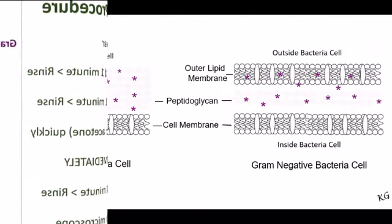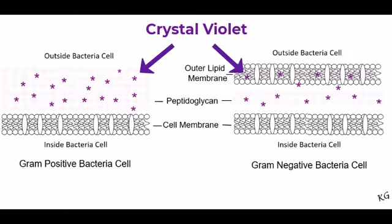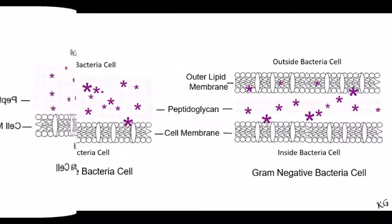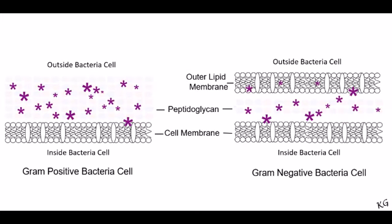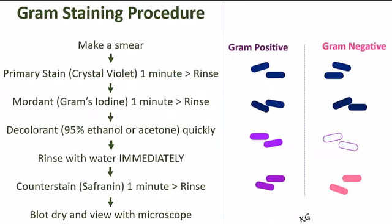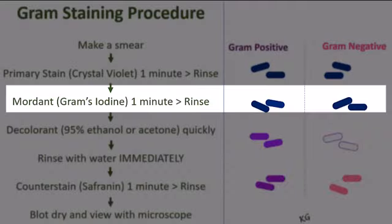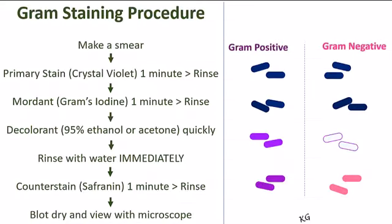Let's step back and see what has happened to the bacteria so far. The crystal violet has attached to the peptidoglycan in the cell walls of both gram-positive and gram-negative bacteria. The iodine is used as a mordant, meaning that it makes the crystal violet complexes larger. If you stopped right now, all of the cells would be purple and you would not be able to tell one type of cell from the other. This next step is the key to the differentiation.